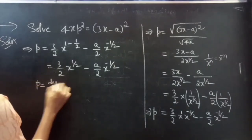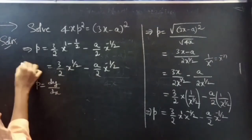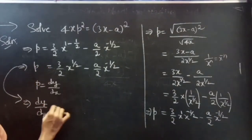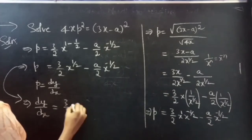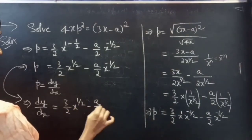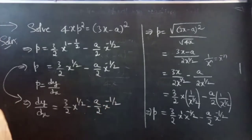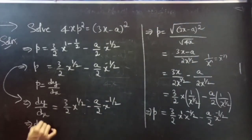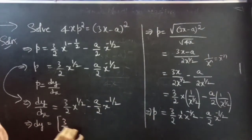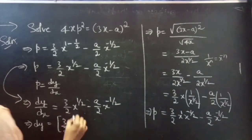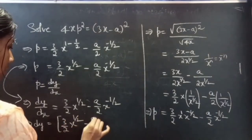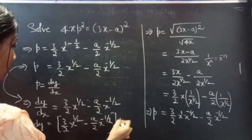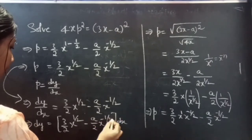Now, since p equals dy/dx, this becomes dy/dx equals 3/2 · x^(1/2) minus a/2 · x^(−1/2). Taking dx to the right-hand side: dy equals (3/2 · x^(1/2) minus a/2 · x^(−1/2)) dx.